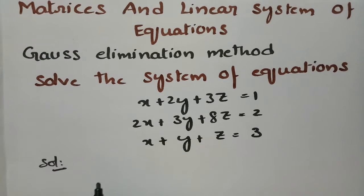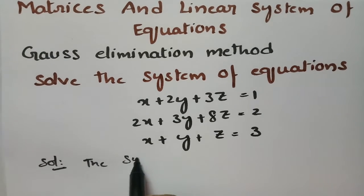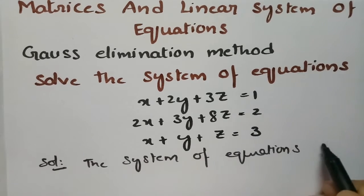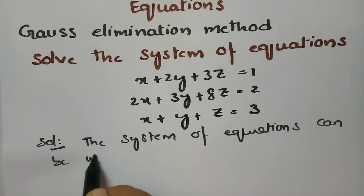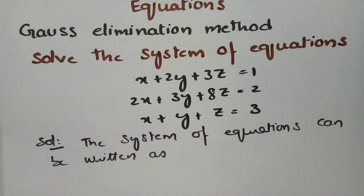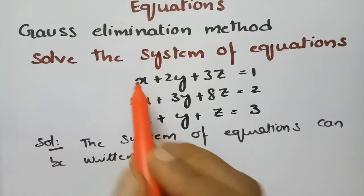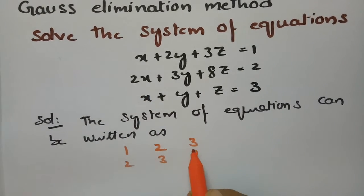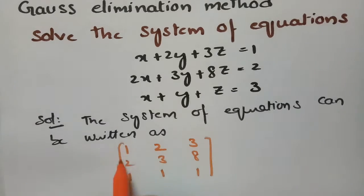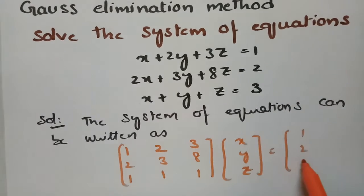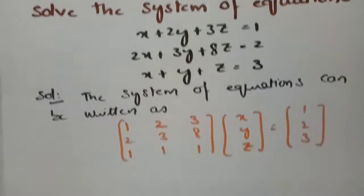The system of equations can be written in matrix form. The coefficient matrix of x has entries 1, 2, 3 and 2, 3, 8. The coefficient vector for x, y, z is 1, 1, 1, giving the right-hand side as 1, 2, 3. This is of the form Ax = b.